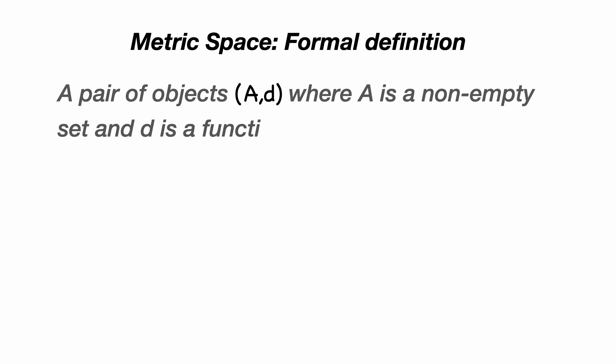A metric space is a pair of objects (A,d) where A is a non-empty set and d is a function which takes A×A and maps it to the real numbers such that: d(x,y) is greater than or equal to zero, so it's never negative; d(x,y) equals zero implies that x is equal to y, so the elements of the set are unique.